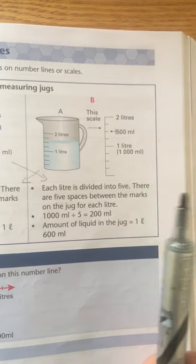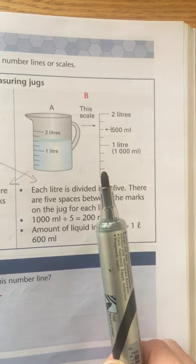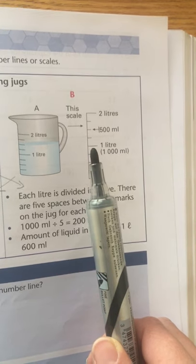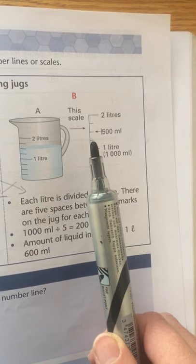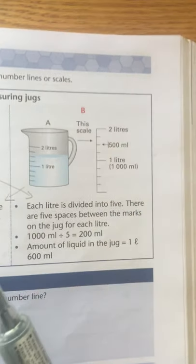So each space is representing 250 milliliters. So the first little line will be 250 then 500 then 750 then a thousand then a thousand two hundred and fifty and then a thousand five hundred milliliters.